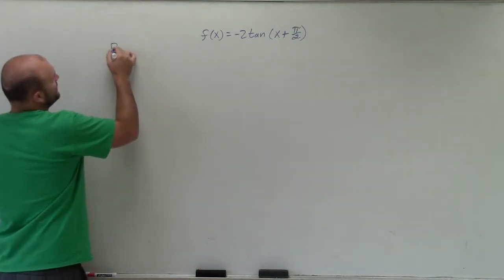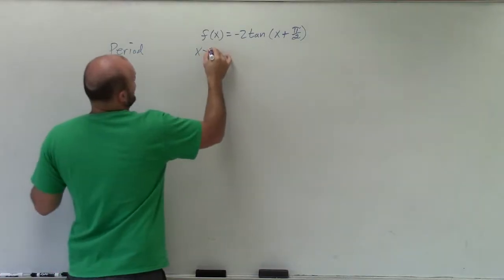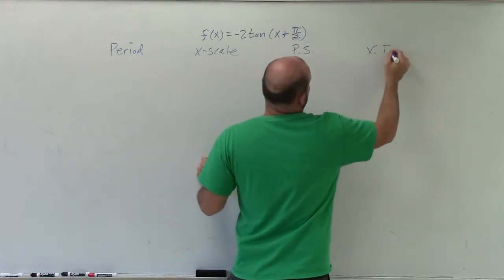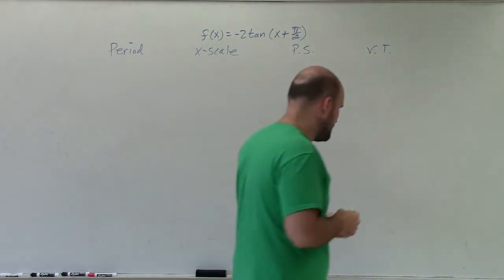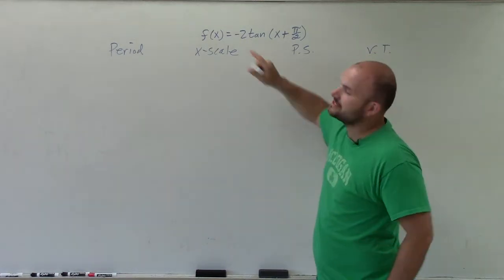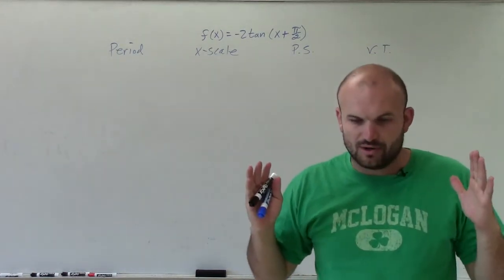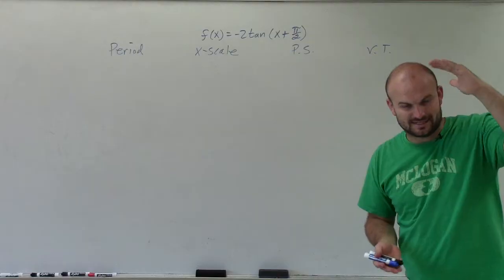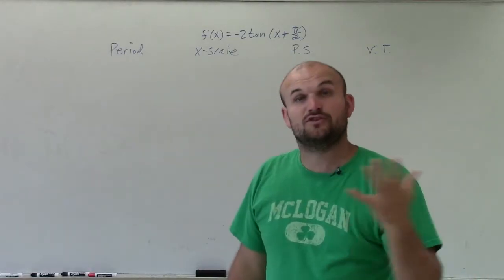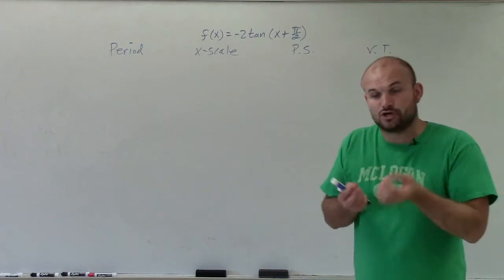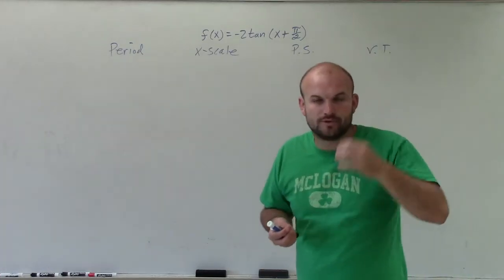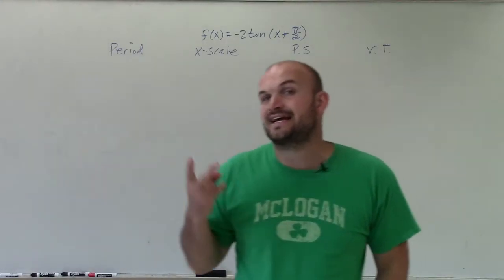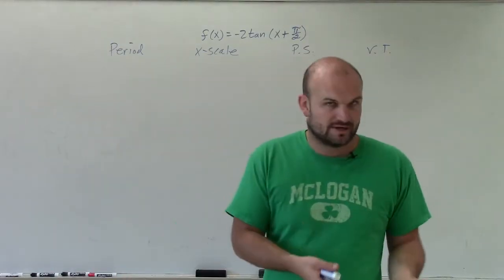However, we can still determine the period, the x-scale, the phase shift, and the vertical transformation. Now, the way I do graphs, I don't really have my graph affected by the 2 directly — what that 2 is going to do is compress the graph, making it look a little skinnier. If you use an x-scale of 4 rather than 2, you could determine additional points within the graph. But I only use an x-scale of 2 because I'm just concerned with where the asymptote and the intercept are.